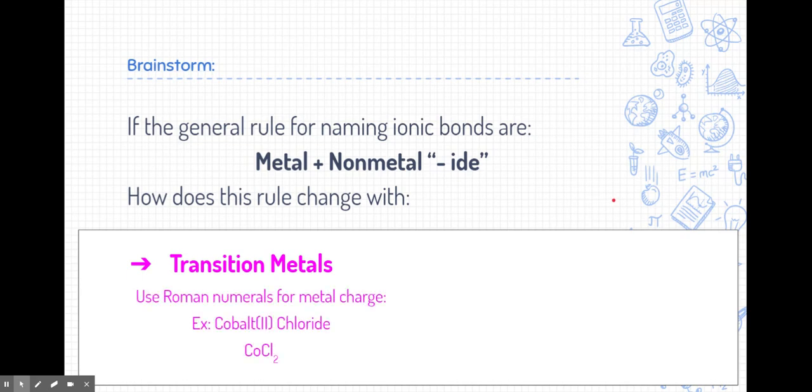Well, if you said that you would use Roman numerals for the metal charge, then you'd be correct. For example, cobalt would include a charge of positive. If the cobalt had a charge of positive two, we would call it cobalt two, in Roman numerals, chloride, and it would be CoCl2.